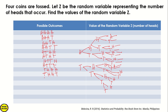Next: tail-head-tail-head, then tail-head-tail-tail. Moving on, we have tail-tail-head-head, tail-tail-head-tail, tail-tail-tail-head, and finally tail-tail-tail-tail. So those are all our possible outcomes.